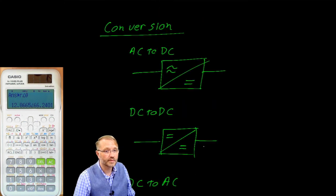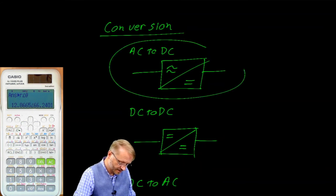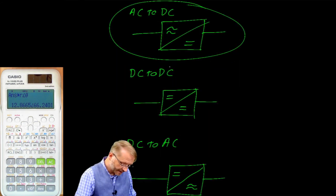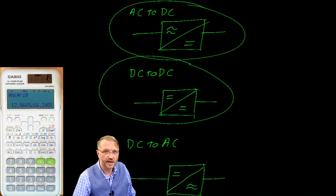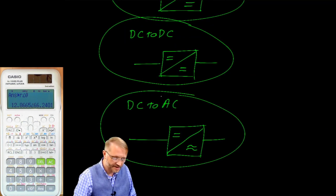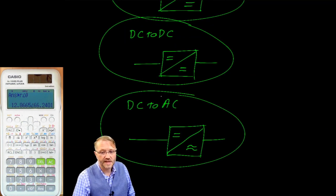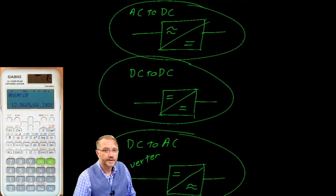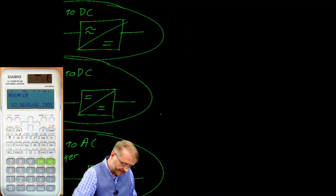Now you probably recognize some of these. This here would be your cell phone charger. It takes AC from the wall and converts it into DC. You likely own many DC to DC converters. But they tend to be smaller and built into the actual devices that you're using. You may own one of these inverters. For example, if you have something that plugs into your car cigarette lighter and then gives you 120 volts out, that is an inverter.